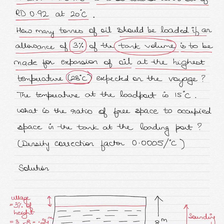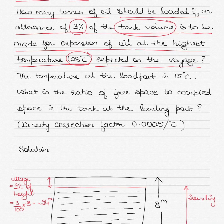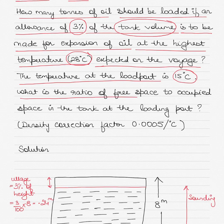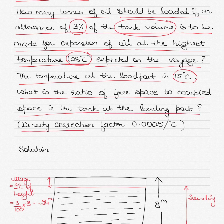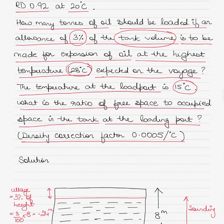This 3% allowance is to be made for the expansion of oil at the highest temperature expected on the voyage, which will be 28 degrees Celsius. We will be loading the oil at 20 degrees Celsius. The temperature at the load port is 15 degrees Celsius. The question also asks for the ratio of free space to occupied space in the tank at the loading port, given that the density correction factor is 0.0005 per degree Celsius.